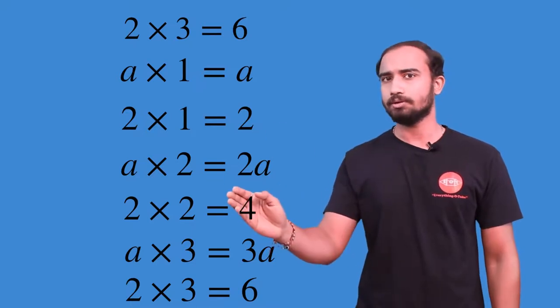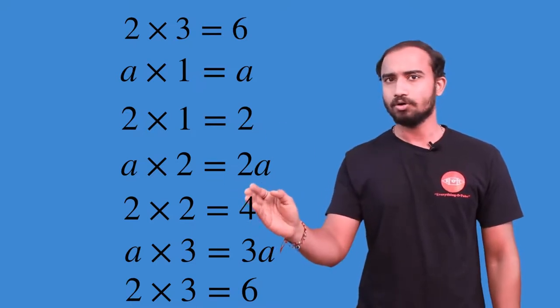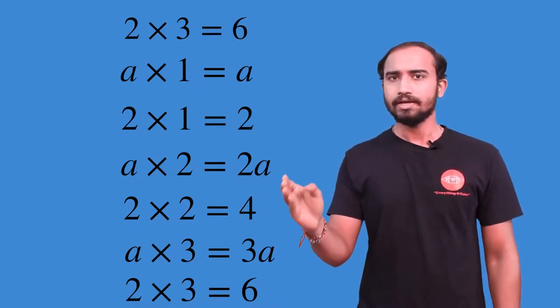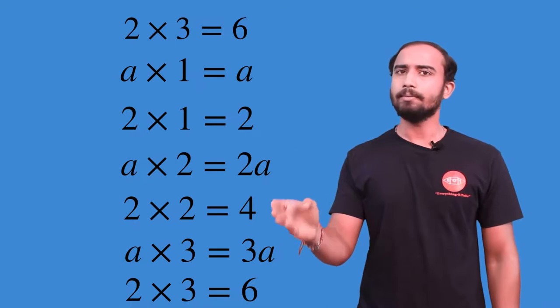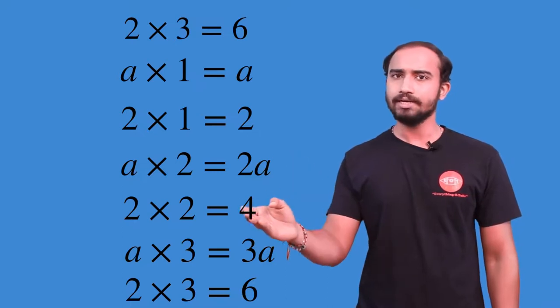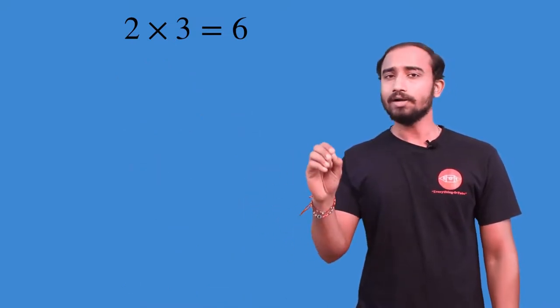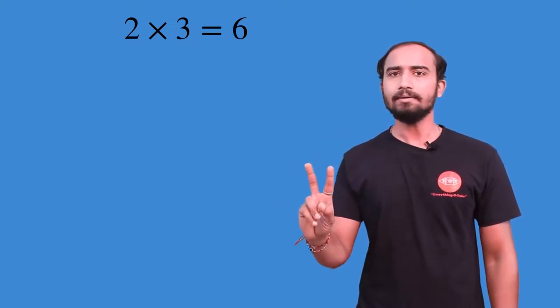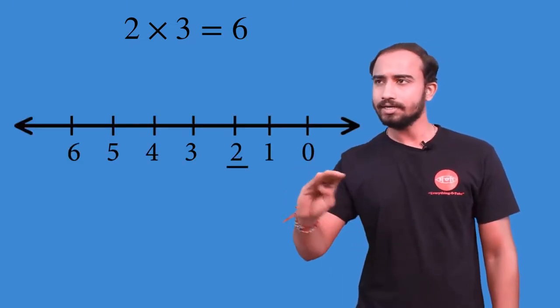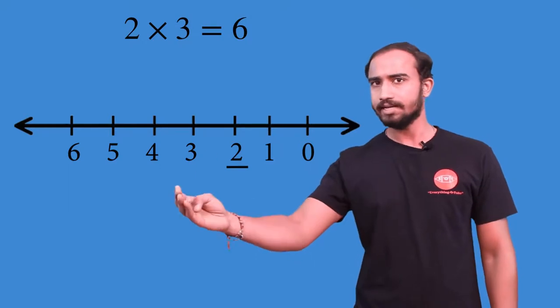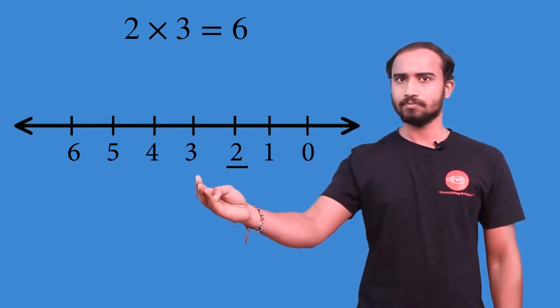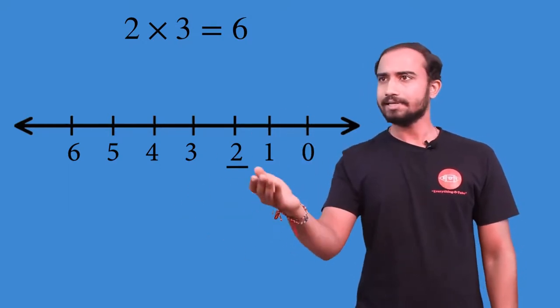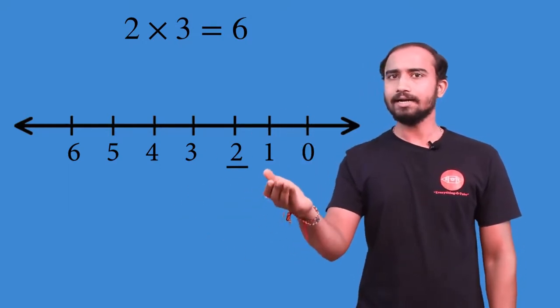Here we are performing 2 × 3. What we are saying is we have to jump two times, with a unit jump of 3. We are currently at number 2 on the number line.